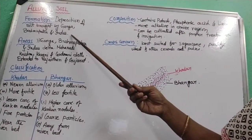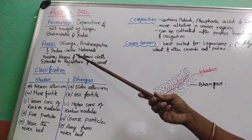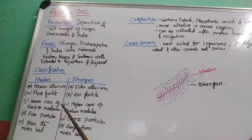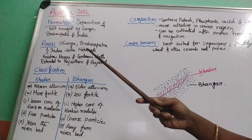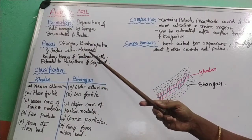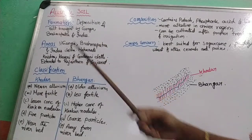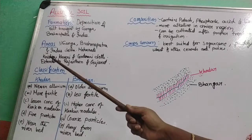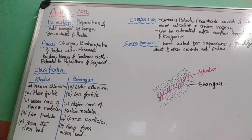The areas where you find alluvial soil are the Ganga, Brahmaputra, and Indus plains and deltas. In the south, you find alluvial soil in the Mahanadi, Krishna, Kaveri, and Godavari deltas. It is also extended to Rajasthan and Gujarat, but only a very small part of Rajasthan, since most of it is desert.